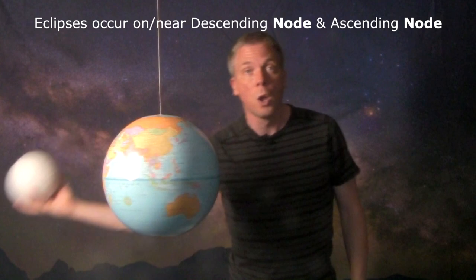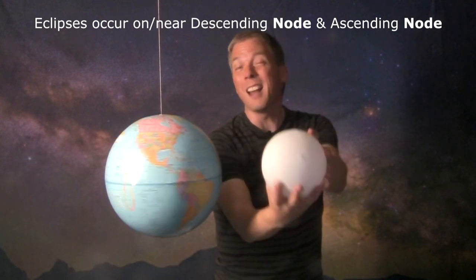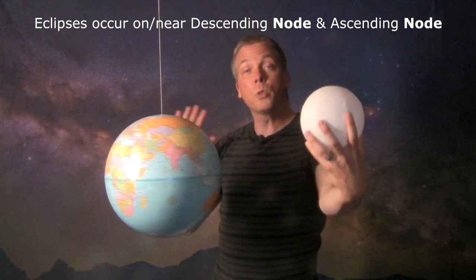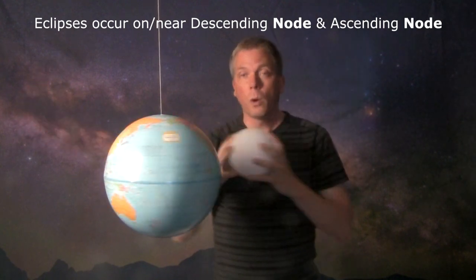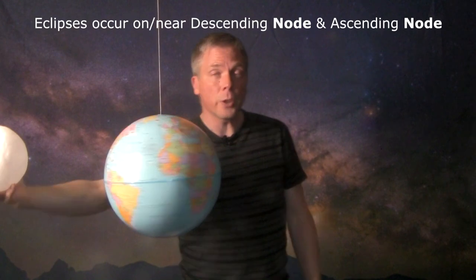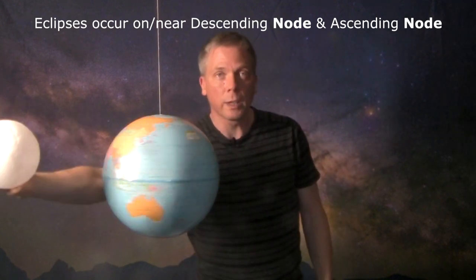And when those nodes happen when the moon is either opposite the sun from the earth or between the sun and the earth, then we either get a solar eclipse or a lunar eclipse. But because that angle is tilted, when it doesn't quite hit the node exactly...